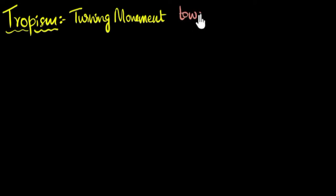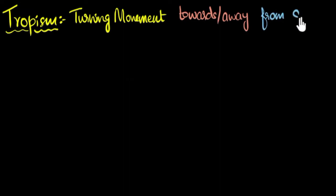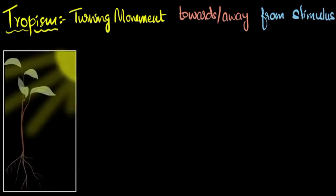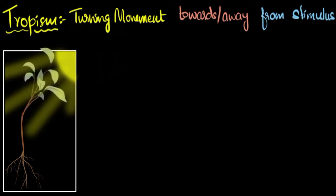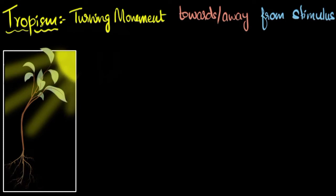Tropism is a turning movement towards or away from some kind of stimulus. If you place a plant in sunlight, over time the shoot will start bending towards the light — this is phototropism. Meanwhile, the root system turns away from the sunlight, which is another type of tropism called geotropism.